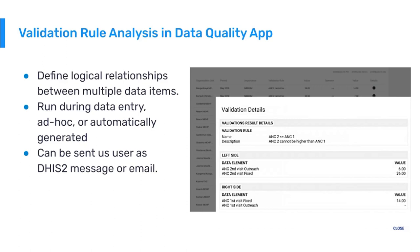The validation rule analysis in the data quality application is another really powerful feature. A validation rule is simply a predefined logical relationship between multiple data items. In this example, you can see ANC1 and ANC2. This example is saying that ANC2 should be less than or equal to ANC1 — a logic statement based upon a general rule of thumb.